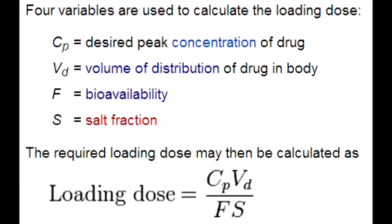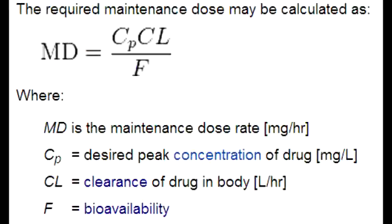What is the equation of maintenance dose? The equation of maintenance dose is CP times CL over F, which is target plasma concentration times clearance over bioavailability.